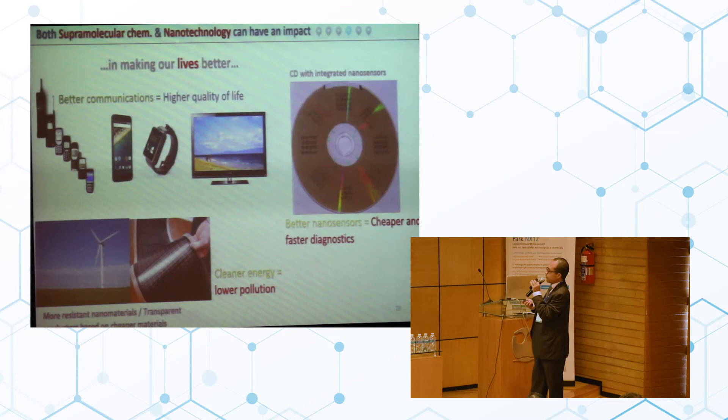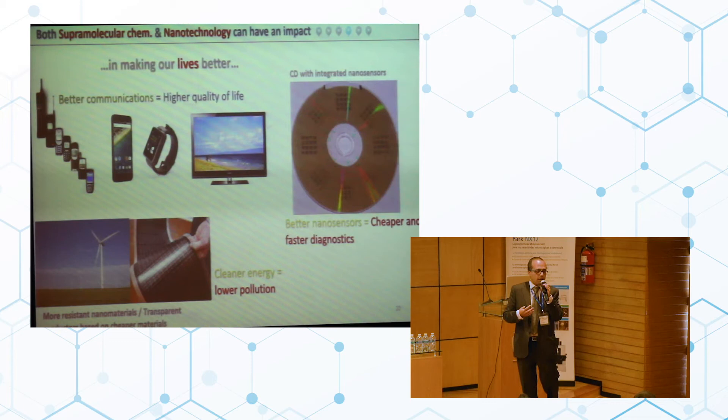But what else with this? What can we do with this? Basically we can do our lives better, because better communication means a higher quality of life. For example, better nanosensors means that diagnostic systems could be cheaper and faster. Cleaner energy will mean lower pollution. More resistant materials could allow you to have some installations that could last for a longer time than traditional ones.